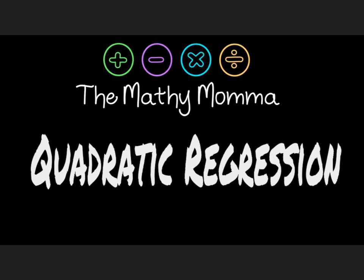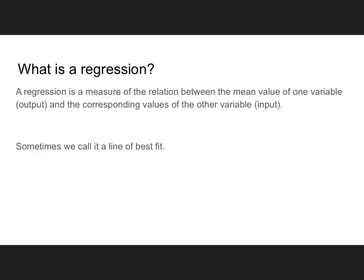This video is going to focus on finding the quadratic regression when given a set of ordered pairs. Just to recap what a regression is — it's simply the measure of the relationship between the mean value in one variable, your output value, and the corresponding values of the other variable, your input. We sometimes call it the line of best fit. These may or may not form a perfect parabola, or in the past we've done linear or exponential. It may not be perfect, but we want to get a line that is as close as possible to as many points as we can.